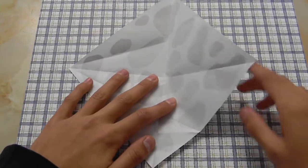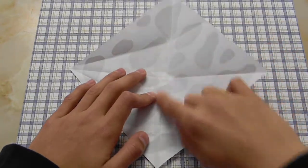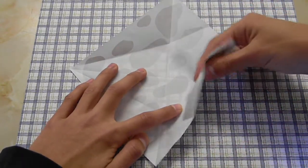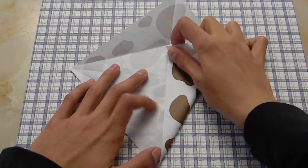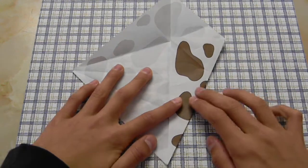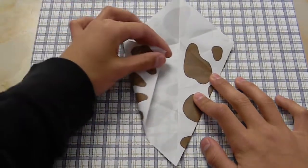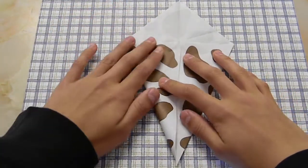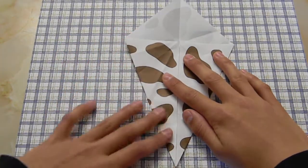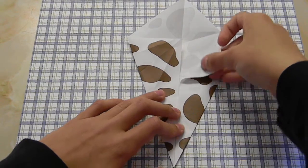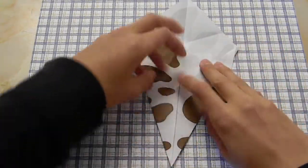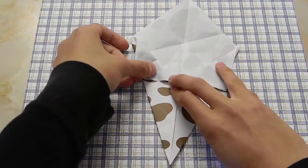Then fold this end along this crease line right here. Repeat the process for this side. Take these ends and fold them out, and repeat the process for this side.